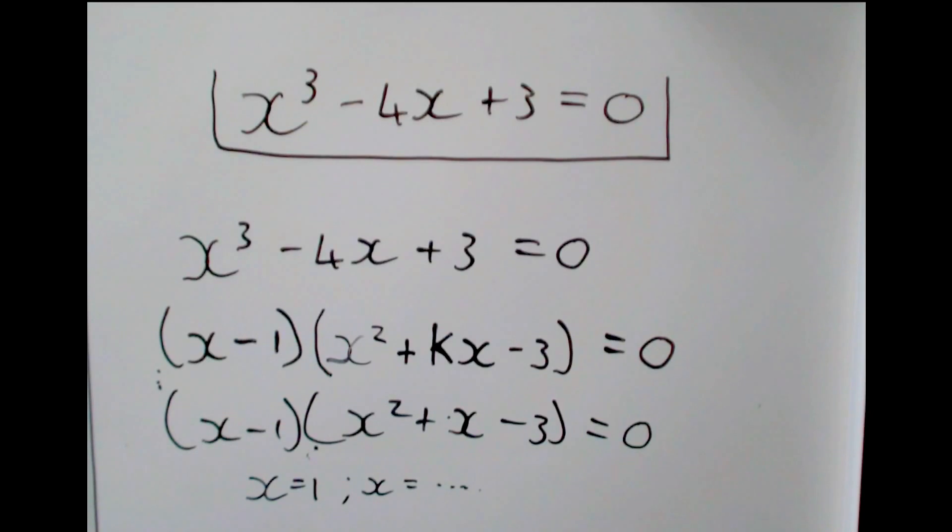We expect to get 3 answers because we were working with a cubic function. It is possible that we get less than 3 answers because we could have a bracket that's squared and then you'd end up with the same answer twice. But we can't get more than 3 answers because that is the maximum we can get with a cubic function.